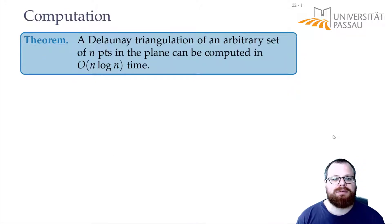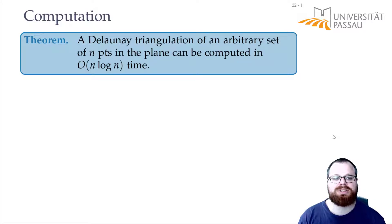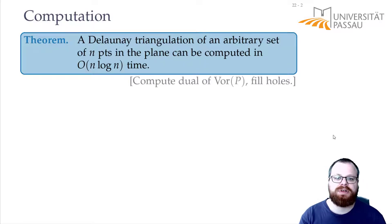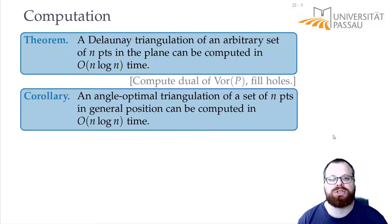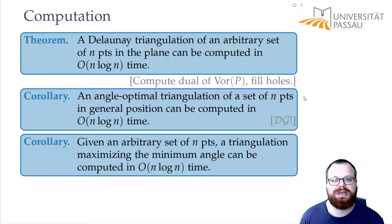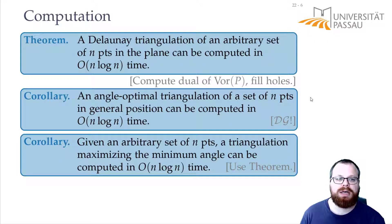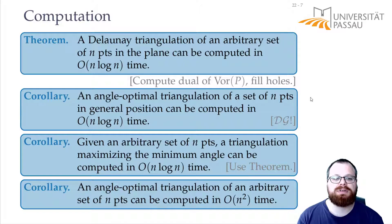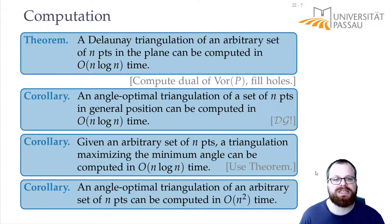Let's conclude. We have shown that we can find a Delaunay triangulation of an arbitrary point set in O(n log n) time. To do that, we compute the Voronoi diagram and its dual, the Delaunay graph, and just fill the holes however we want to get any Delaunay triangulation. If the points are in general position, this gives us an angle-optimal triangulation in O(n log n) time. If the points are in arbitrary position, we can maximize the minimum angle in O(n log n) time by filling the holes in an arbitrary way. Also, an angle-optimal triangulation for an arbitrary point set can be computed in O(n²) time.